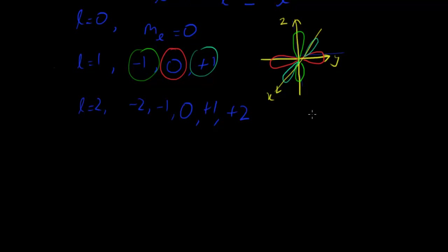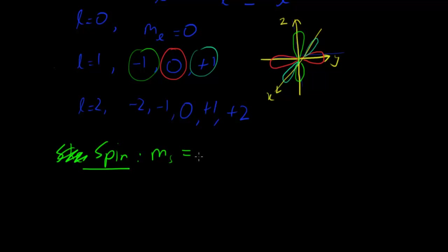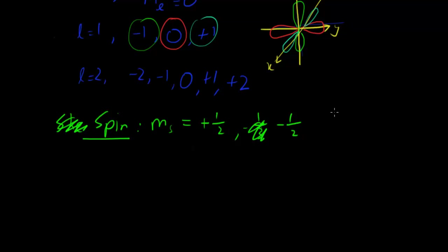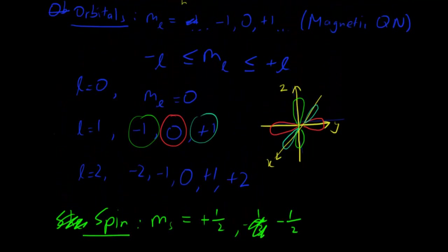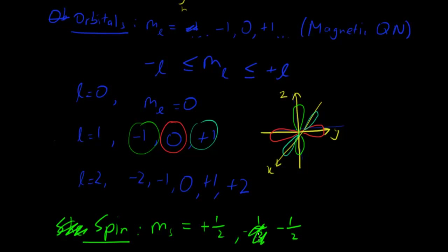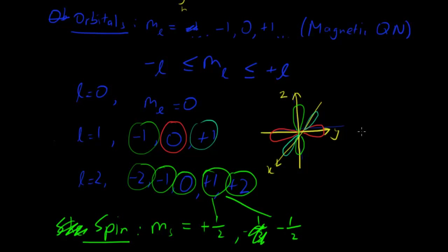The last quantum number is probably the simplest — spin, denoted by M sub s, which can only equal plus one-half or minus one-half, because electrons have only a positive half or negative half spin. That is why you can fit two electrons in each orbital. Because there are two different spins and hence two different sets of quantum numbers available, you can fit two electrons of different spins in each orbital, and they don't have the same set of quantum numbers because their spins are different.